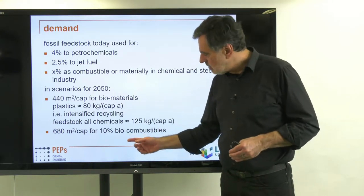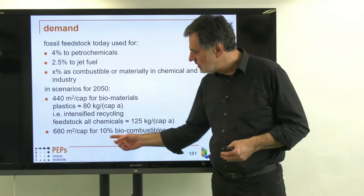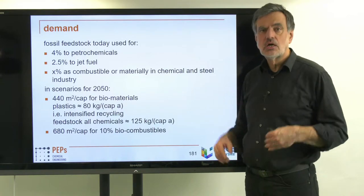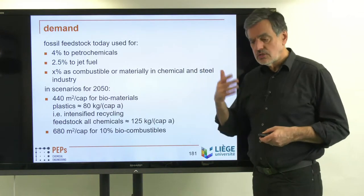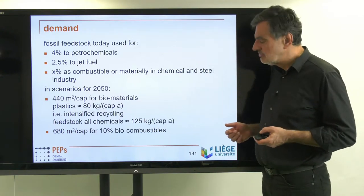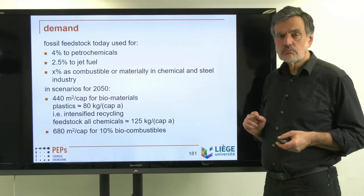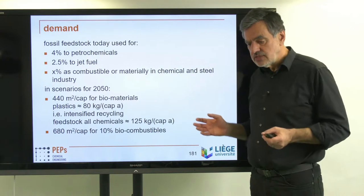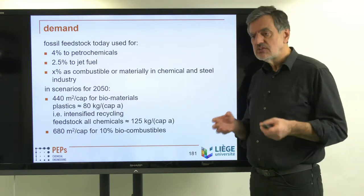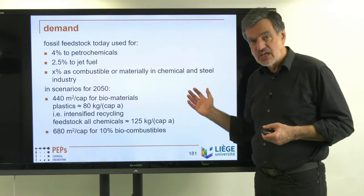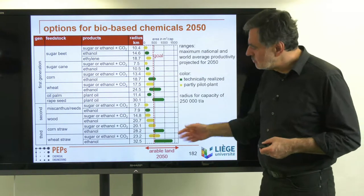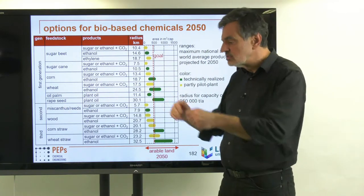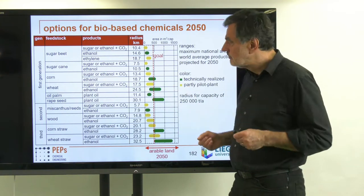For biocombustibles, I assumed 10% of primary energy consumption, using 680 square meters per capita in 2050. To quantify these things, I evaluated land-area-specific productivities for a variety of crops and the major components they contain, calculating how much land area is needed to supply the required amounts. This is shown in the diagram — the different options for bio-based chemicals in 2050, with productivity scaled according to the current rate of efficiency increase.